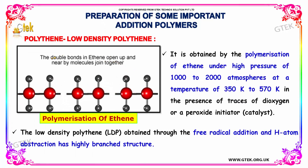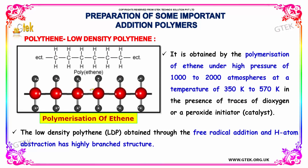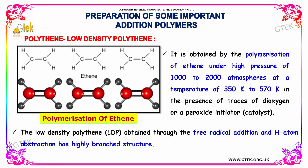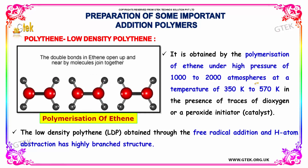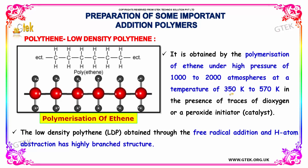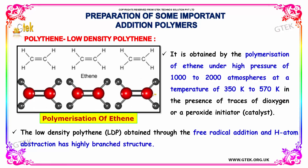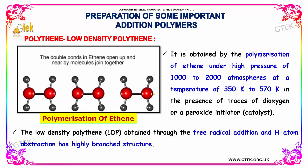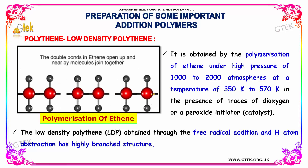Let us now study about low density polythene. It is obtained by the polymerization of ethene under high pressure of 1000 to 2000 atmospheres, at a temperature of 350 to 570 K, in the presence of traces of dioxygen or a peroxide initiator.